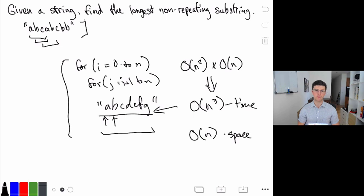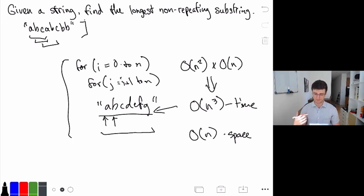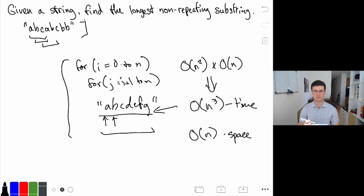Now that we have a working brute force solution, let's look at how to optimize. We don't actually need to generate all of the different substrings — we only need to generate the ones that are potentially the longest. One idea is to start with all substrings of length 26, then length 25, then 24, and so on. This is essentially like a breadth-first search — the first time we find a valid substring, we know it's the longest since we started from the top. But if you've studied strings, you'll realize there's another approach we can take.